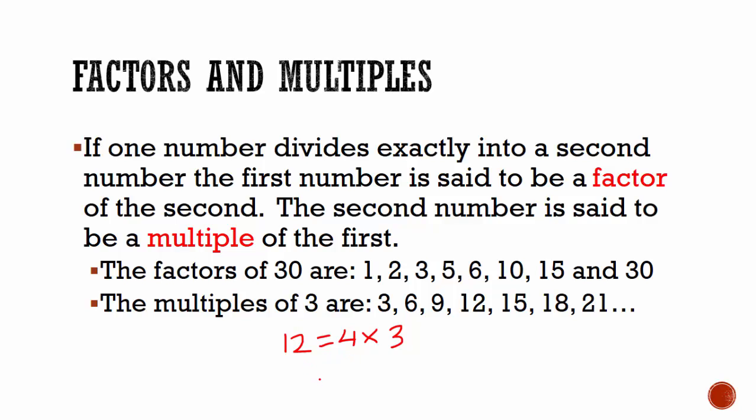For instance, 30. 1 multiplied by 30 is equal to 30, so both 1 and 30 are factors of 30. Similarly, 2 multiplied by 15 is equal to 30, 3 multiplied by 10 is equal to 30, and 5 multiplied by 6 is equal to 30.